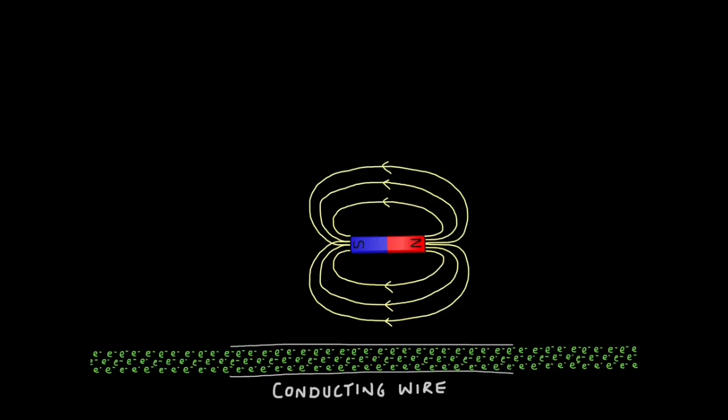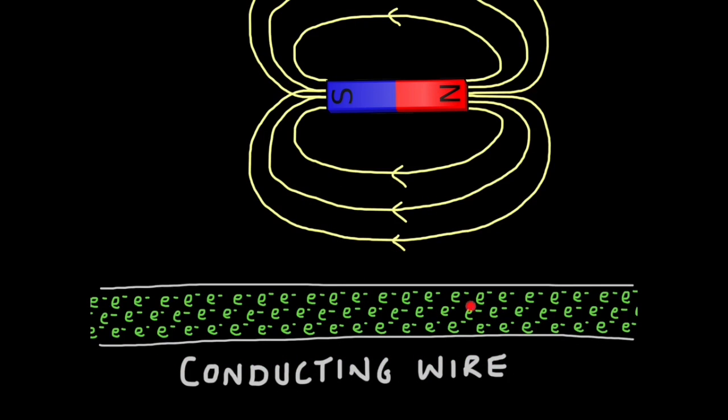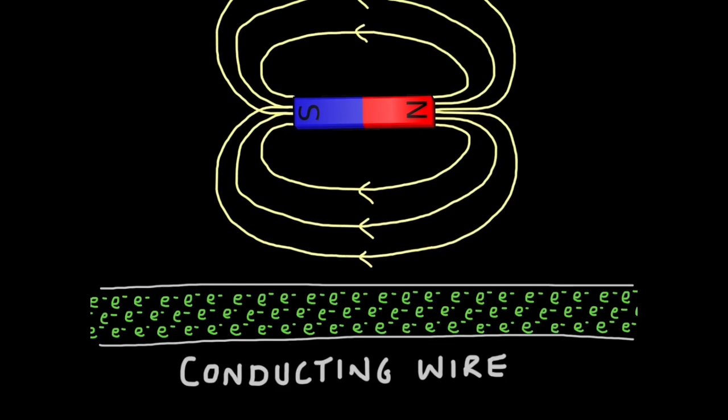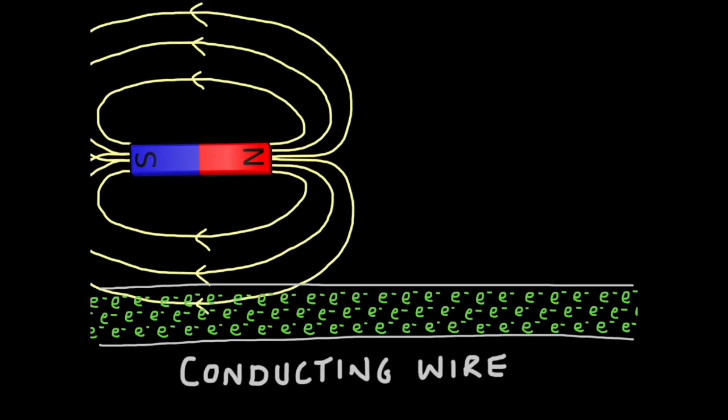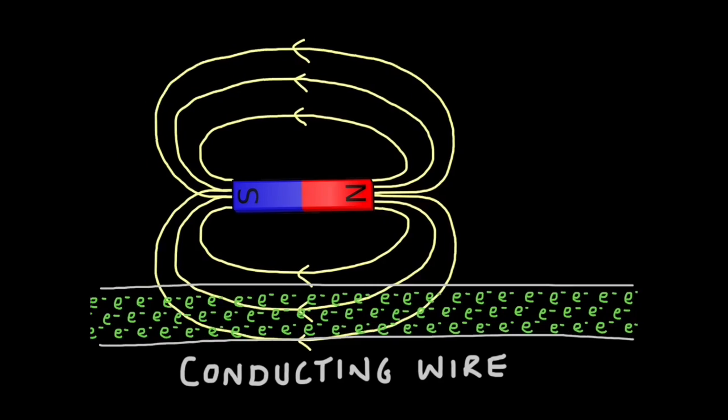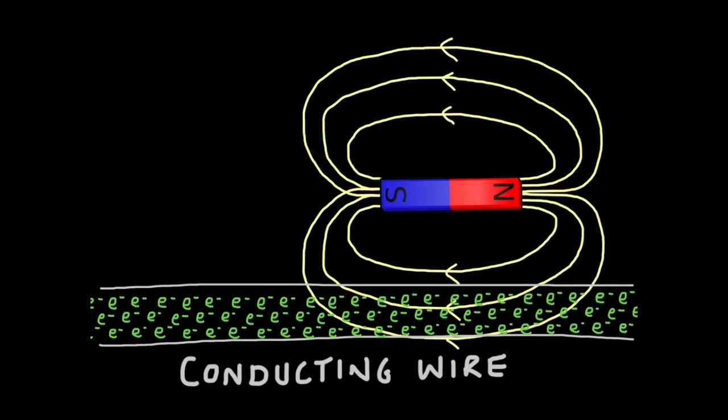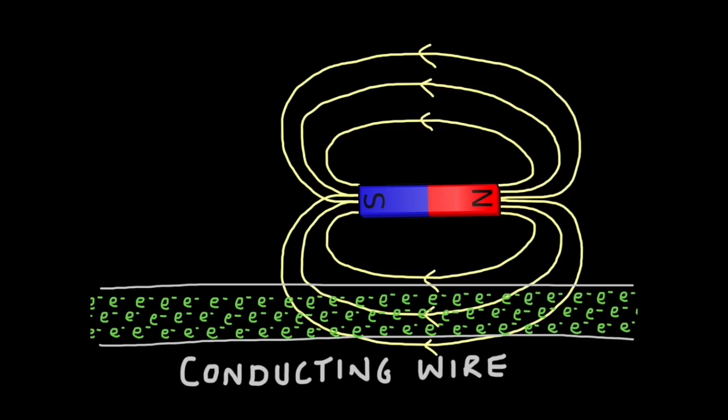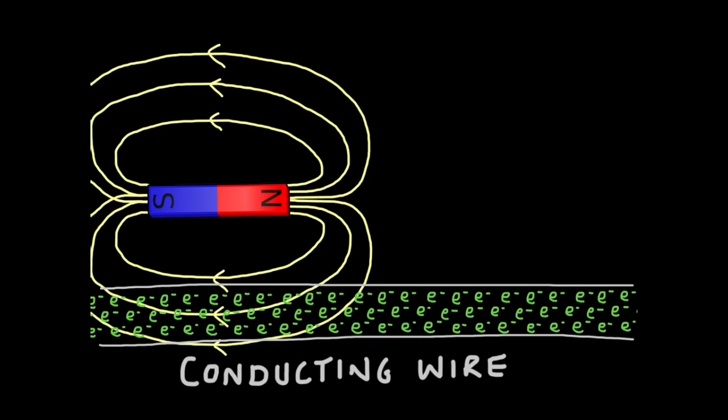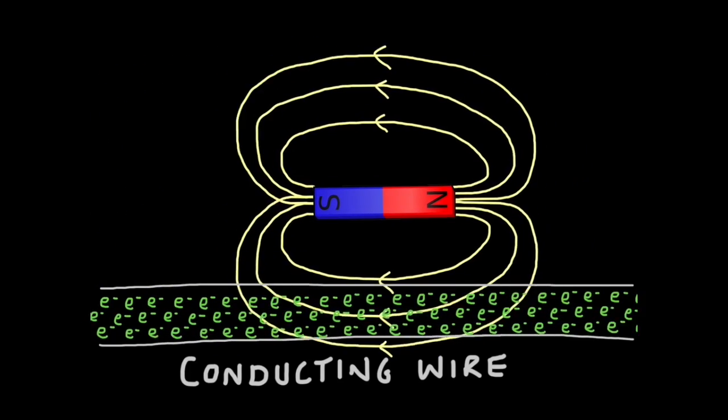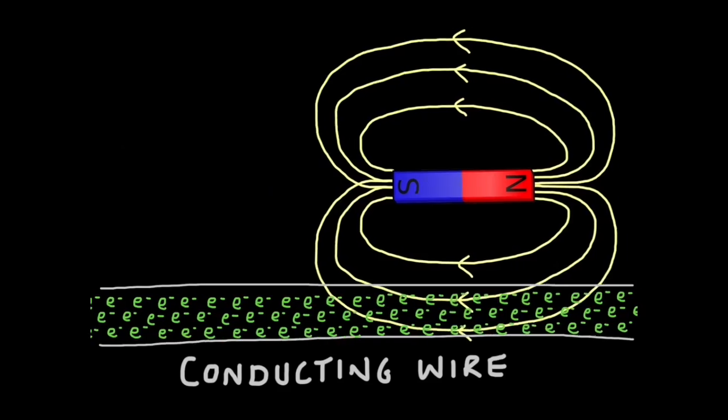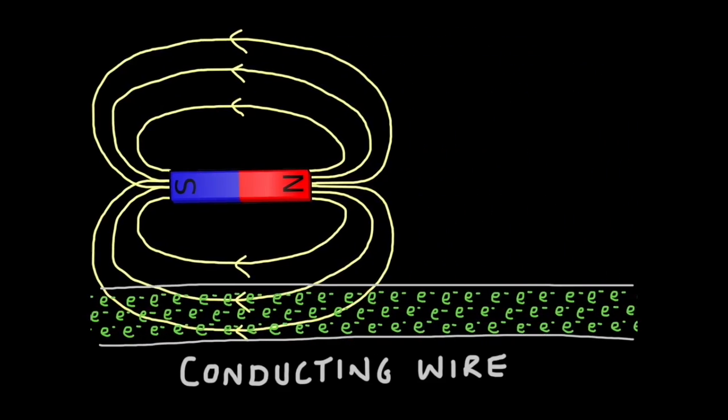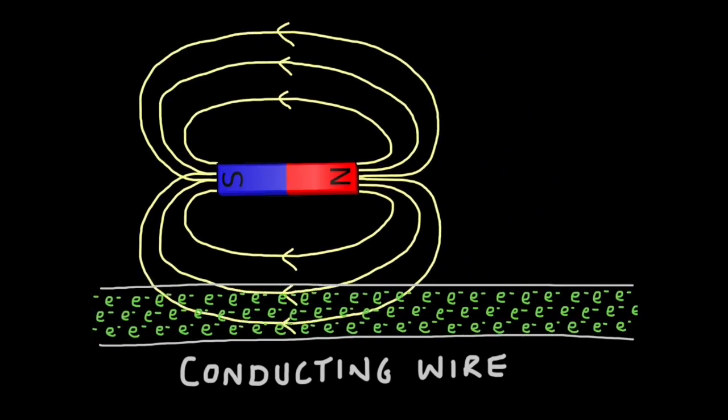Field lines always travel from north pole to south pole. Here I've got a conducting wire filled with electrons that are free to move. If I get my magnet and get the field lines to sweep this wire in one direction, the electrons move in the direction of the pole. And when I sweep the other direction where the south pole leads, the electrons move in the other direction. So I get this movement back and forth. In other words, I'm getting an alternating current.